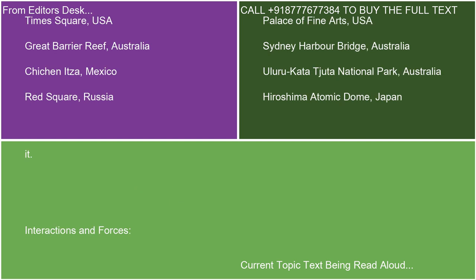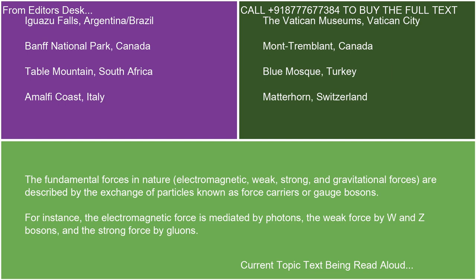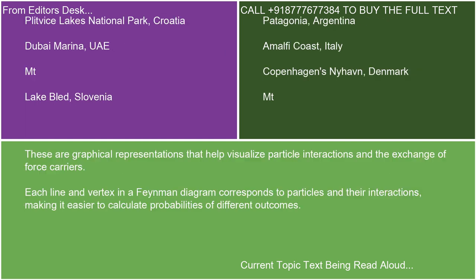Interactions and Forces. The fundamental forces in nature — electromagnetic, weak, strong, and gravitational forces — are described by the exchange of particles known as force carriers or gauge bosons. For instance, the electromagnetic force is mediated by photons, the weak force by W and Z bosons, and the strong force by gluons. Feynman diagrams are graphical representations that help visualize particle interactions and the exchange of force carriers. Each line and vertex in a Feynman diagram corresponds to particles and their interactions, making it easier to calculate probabilities of different outcomes.